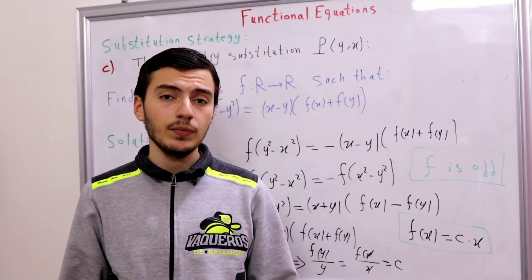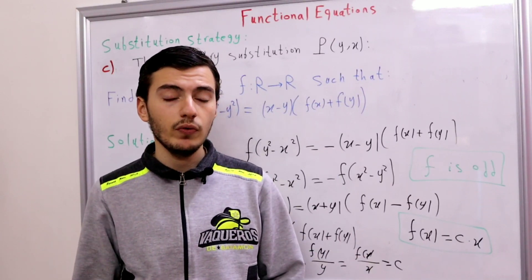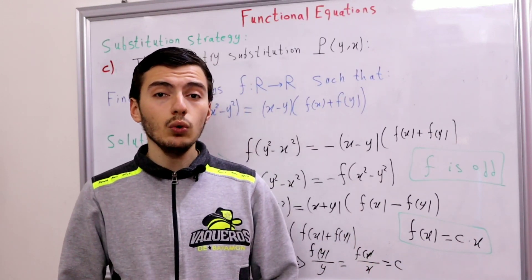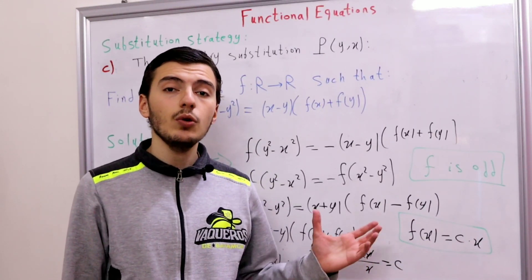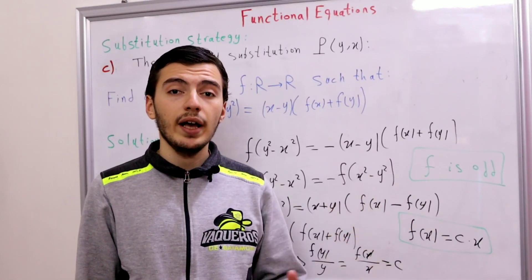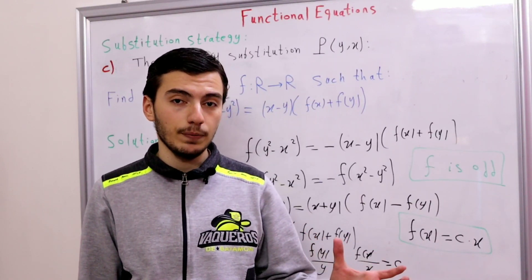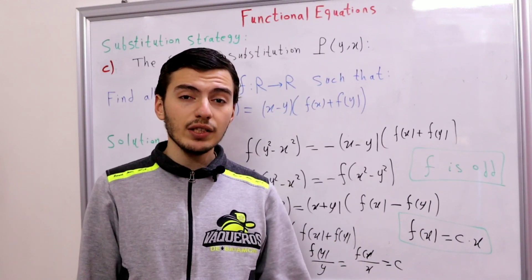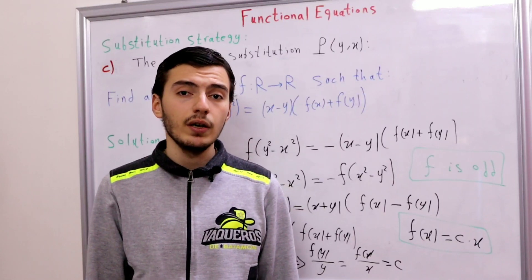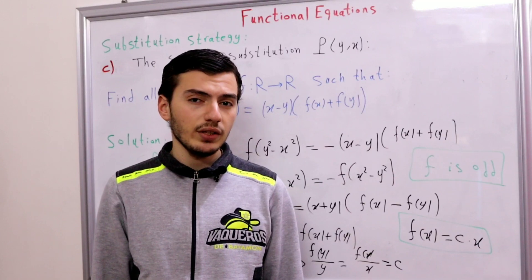The moral of the story: when you find a functional equation which contains some symmetry — for example f(x) + f(y) or f(x)·f(y) — always think of the substitution P(y, x), then compare the new functional equation with the original. You will always get some simple and useful information. In the next video we'll discuss a very important idea that many olympiad students forget to prove. Don't forget to like, share, and subscribe — see you in the next video!